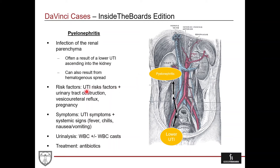Some risk factors for pyelonephritis include all the UTI risk factors, plus obstruction along the urinary tract — similar to ascending cholangitis in the biliary system — where a blockage results in a buildup of bacteria that can ascend. Vesicoureteral reflux, where there's dysfunction of the valve at the ureterovesical junction causing urine to reflux from the bladder into the ureter, is another risk factor. Pregnancy can also increase risk. As far as symptoms go, all the UTI symptoms plus systemic symptoms. If it's just a lower UTI in the bladder, you usually don't have significant systemic symptoms. But if someone has really bad fever, chills, nausea, and is very sick, that's going to be more associated with or make you suspicious for pyelonephritis, as we see with our patient.